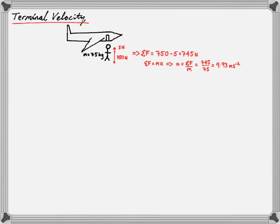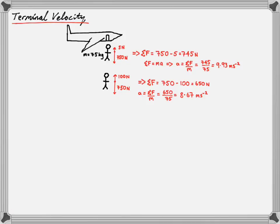If there was no air resistance, his acceleration would have been exactly 10 m/s². At a new position further down, his weight is still 750 newtons, but the force of air resistance has now increased to 100 newtons — because as his velocity increases, the rate at which air pushes past him also increases, so air resistance increases. The net force is now 750 minus 100, giving 650 newtons, and his acceleration is now the lower value of 8.67 m/s².